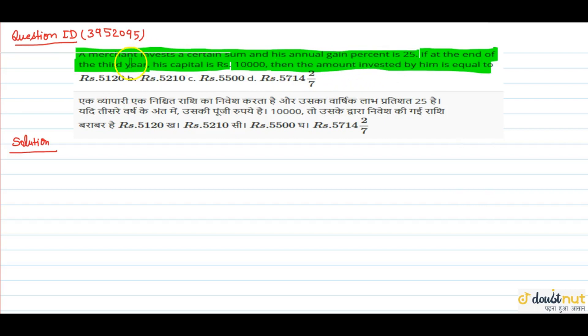Then the amount invested by him is equal to what? How much amount did he invest initially if the final amount is 10,000 Rs? How much was the principal? How do we get out of this? We will note here.